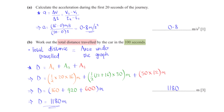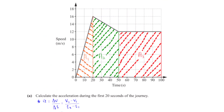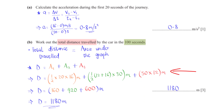The distance traveled equals the area under the speed-time graph. For the entire 100-second journey, we split the area into basic shapes: A1 is a triangle, A2 is a trapezium, and A3 is a rectangle. By substituting the values from the graph and simplifying, the total distance traveled is 1,180 meters.